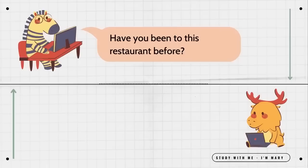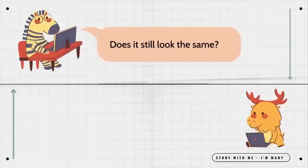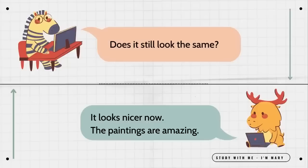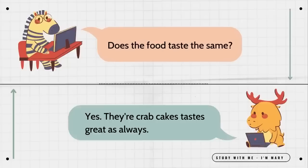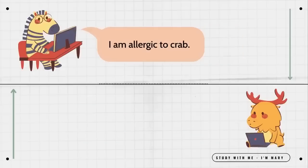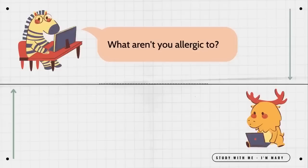Have you been to this restaurant before? Yes. The last time I came here was two years ago. Does it still look the same? It looks nicer now. The paintings are amazing. Does the food taste the same? Yes. Their crab cakes taste great, as always. I am allergic to crab. That's too bad. It's okay. The chicken sandwich was just great. I'm allergic to chicken. What aren't you allergic to? All the stuff that tastes bad.